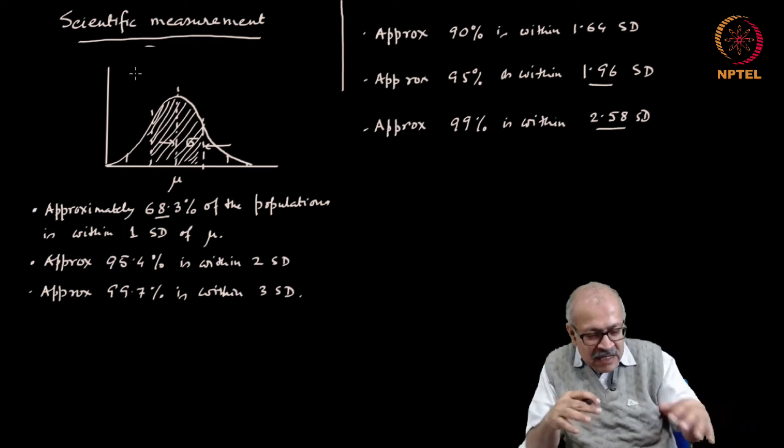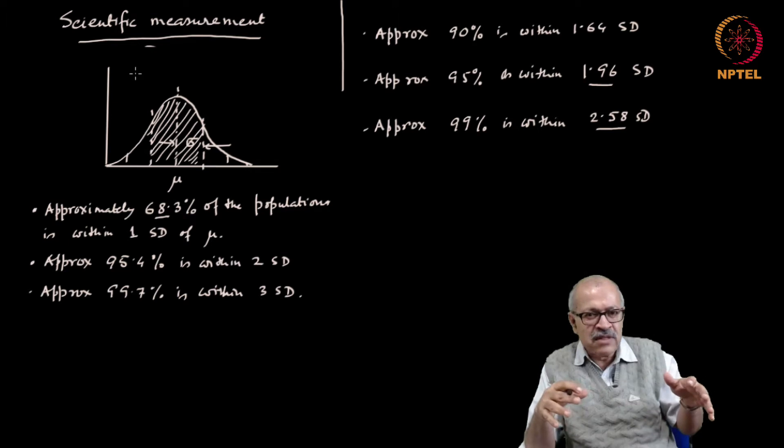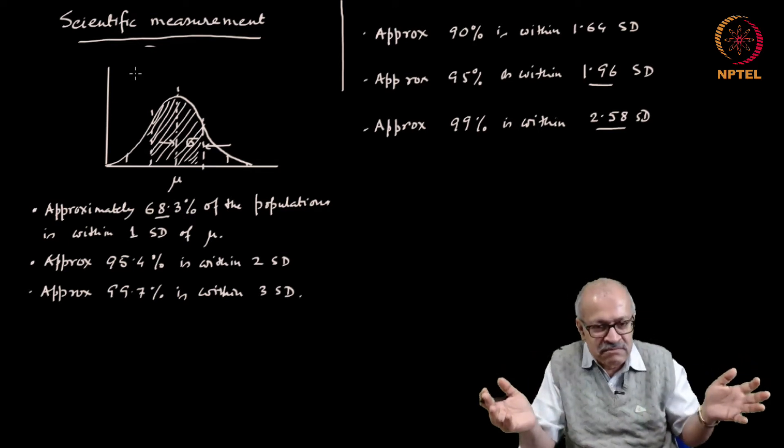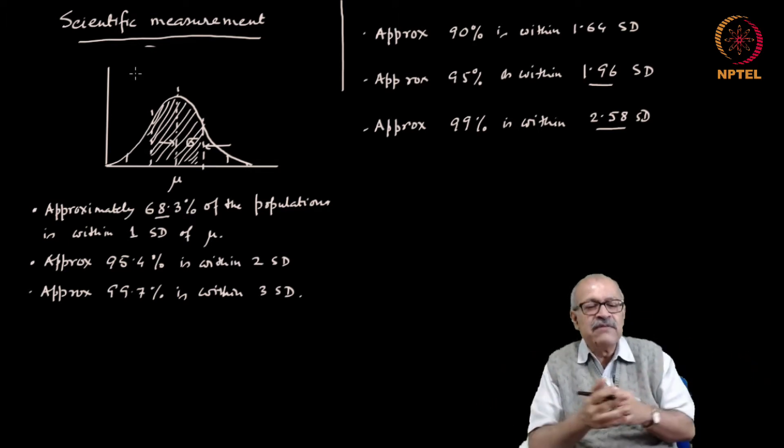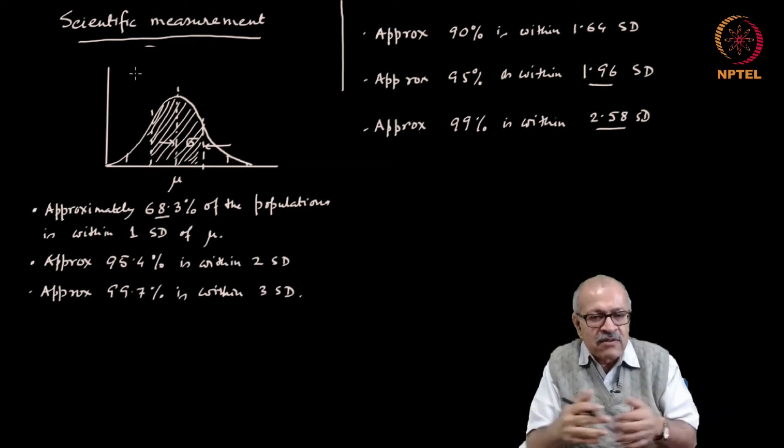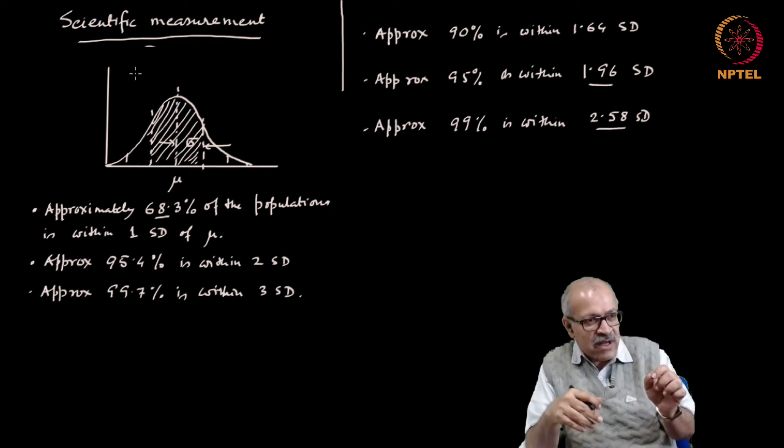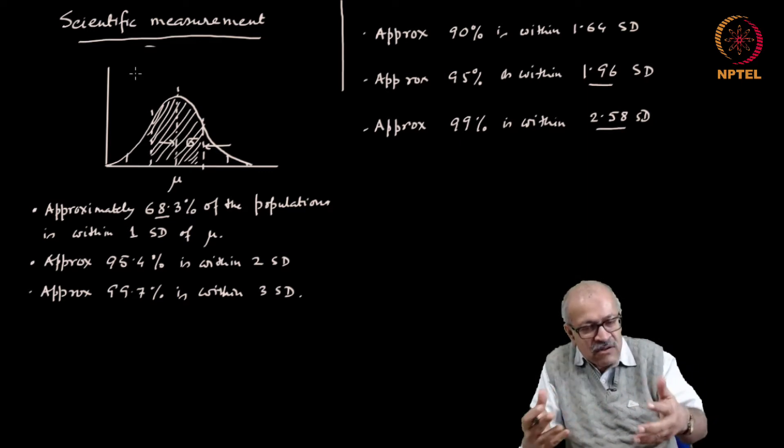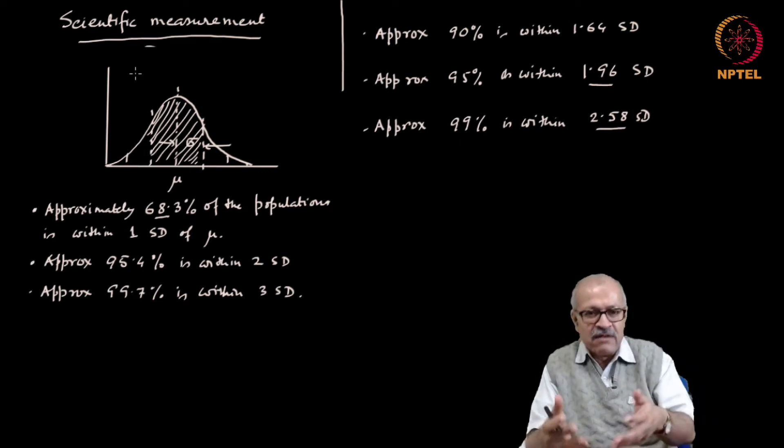When we are trying to measure a constant, the variability comes from the random changes that we have, random variation of the results. But there are situations where the thing that we are trying to measure has an inherent variability.